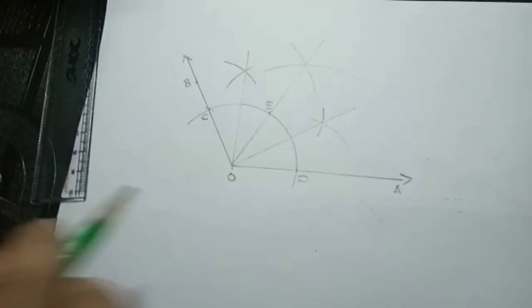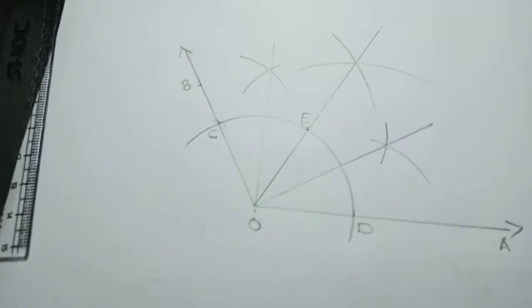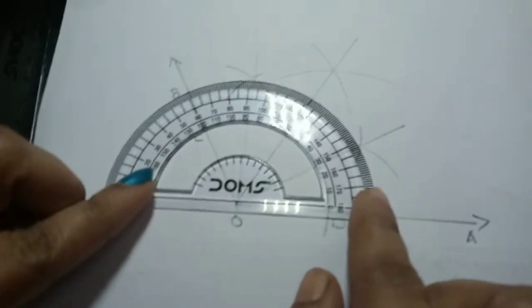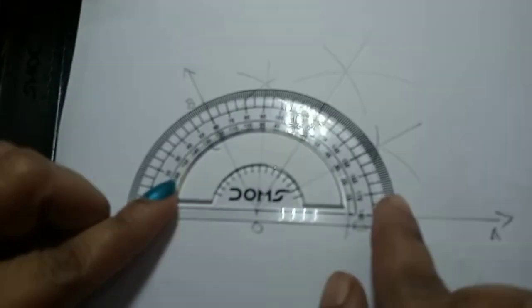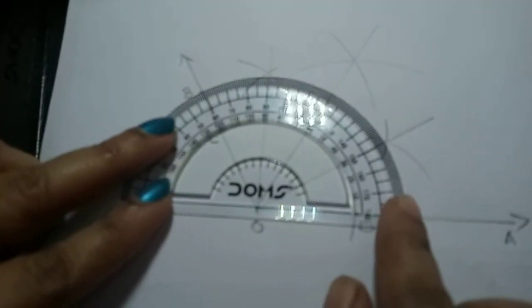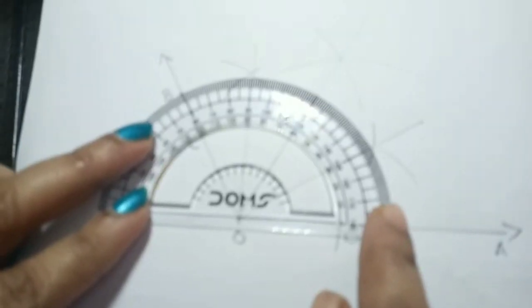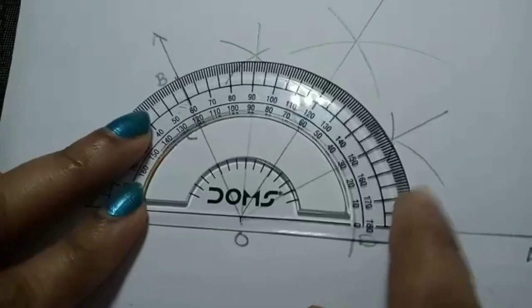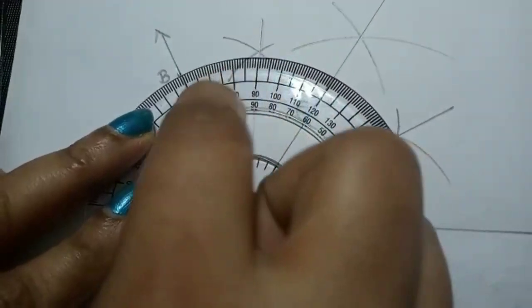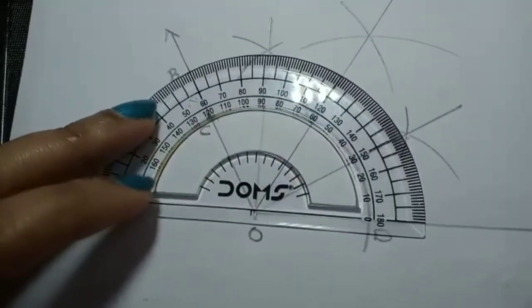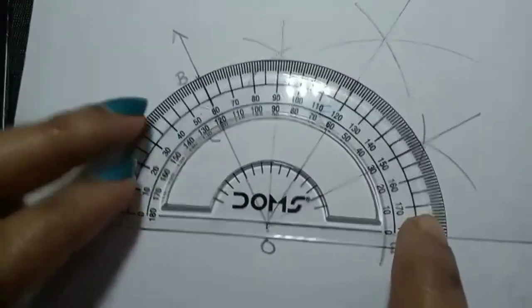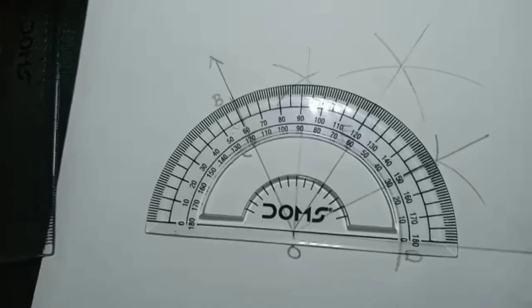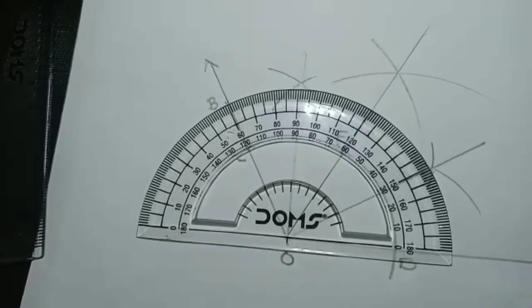Yeah, now we can check whether we got the correct angles. Okay, so we have to keep the measurement there. So, yeah, this is 30 degree, 60 degree, 90 degree and 130 degree. See, what does it mean? See, this 120 degree we have divided into four equal parts.